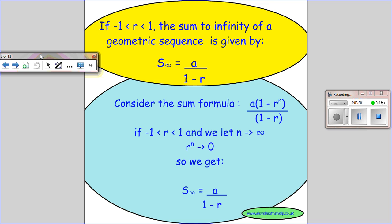Okay, now if we have that r is limited to being between minus 1 and 1, so that means it's a decimal, so it's under 1, so it's 0.1, 0.2. We get the sum to infinity of a geometric series is given by this thing here. And we can see how we get that.